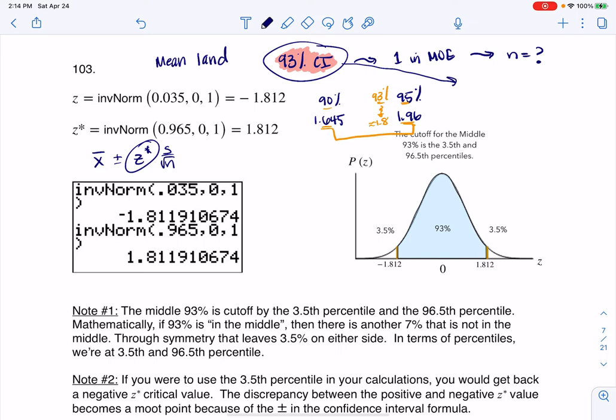This is the middle 93% of my data, or I should say of my sampling distribution, and we need to convert that to a percentile, and once we convert it to a percentile, then we can use inverse norm.